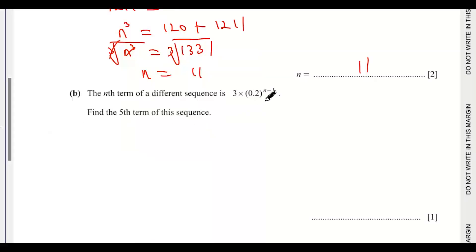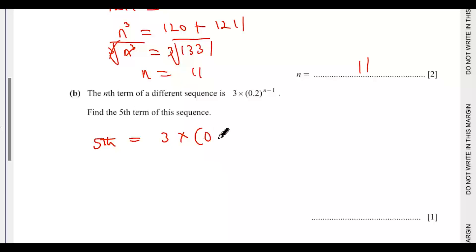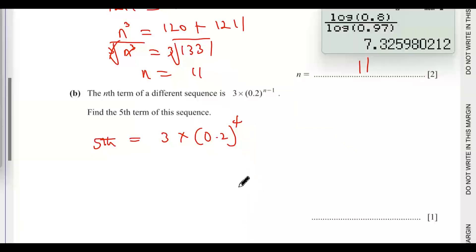Part b: the nth term of a different sequence is 3 times 0.2 to the power of n minus 1. Find the fifth term of this sequence. The fifth term means n equals 5, so that will be 3 times 0.2 to the power of 4.